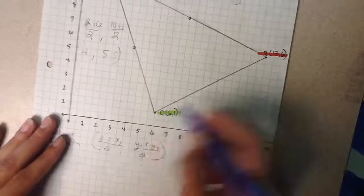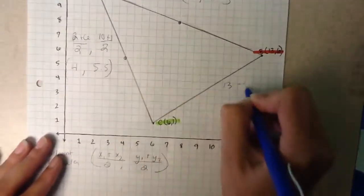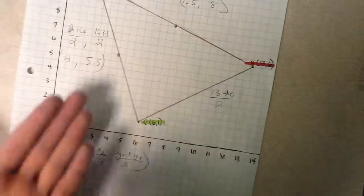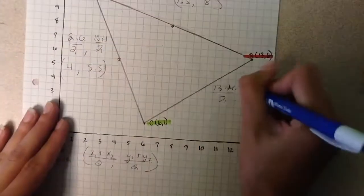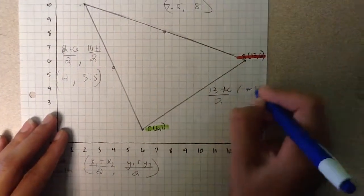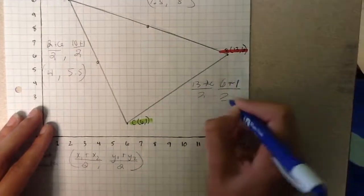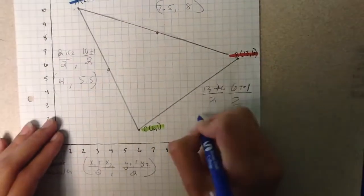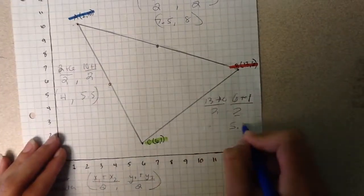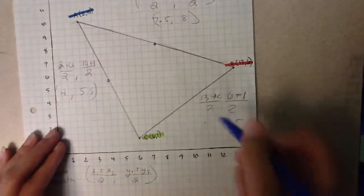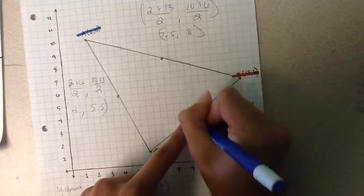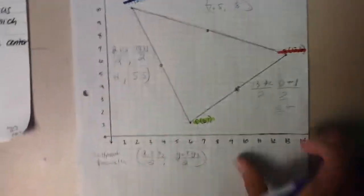BC, where the line segment is going to be 13 plus 6, divide that by 2, 6 plus 1, divide that by 2, which is going to get you 9.5, comma, 3.5. This one's going to be located right here. After doing that math, and the pen sucks.